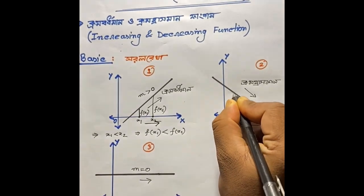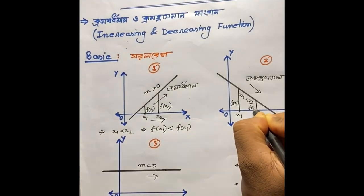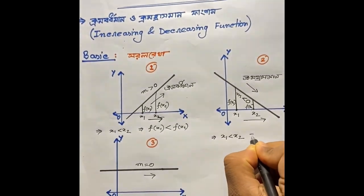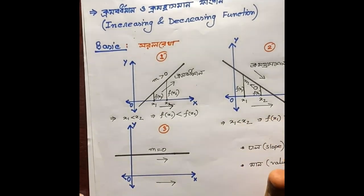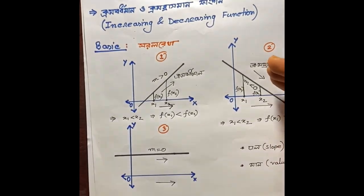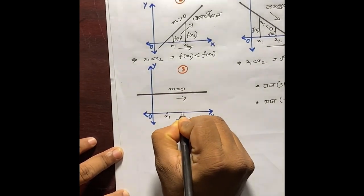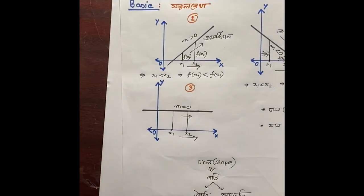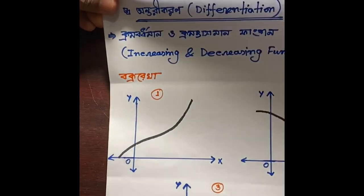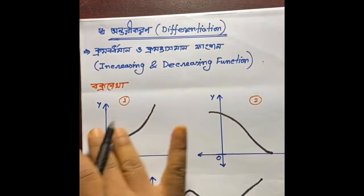x1 < x1 — આ ameter ফাংশনের মান বেড়েছি। এটা আমার fx1 বরাবর। আবার ক্রমরাশমান ফাংশন — যখন ধাল শূন্য, সেক্ষেত্রে ক্রমাবর্ধমান নই, ক্রমরাশমান নই; বলতে পারি ক্রমান বৃদ্ধি হতে পারি কিন্তু ফাংশনের মান বৃদ্ধি হবে না।